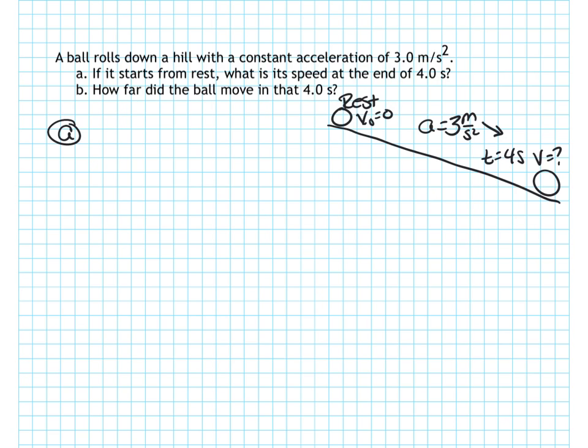Okay, so let's get started. Part A, I'm going to look at my list of givens here. So these are the things that I know. I know that the initial velocity is equal to 0. I know the acceleration is 3 meters per second squared. And the time is equal to 4 seconds. And I'm looking for the final velocity.